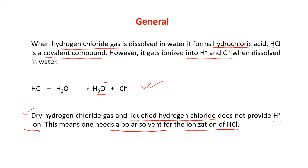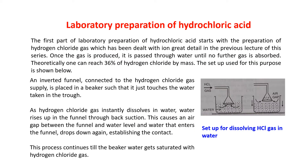Laboratory preparation of HCl — the first part, which is production of the gas, we have already discussed in lecture 1. Once the gas is produced, it is passed through water until no further gas is absorbed. Theoretically, one can reach 36% of HCl by mass.